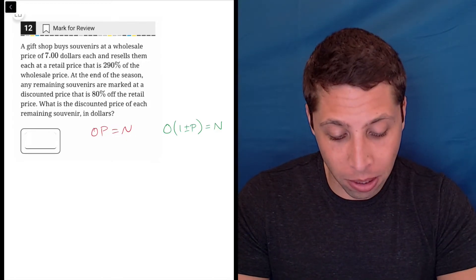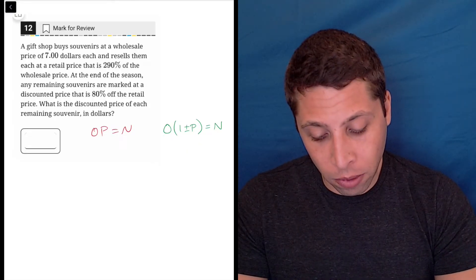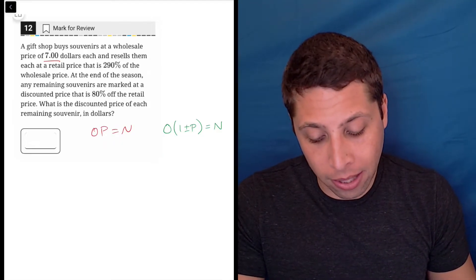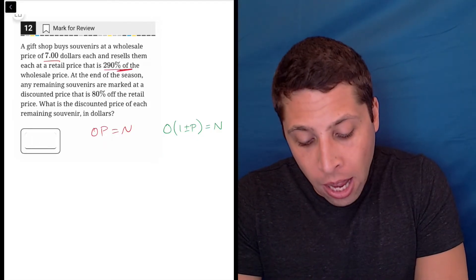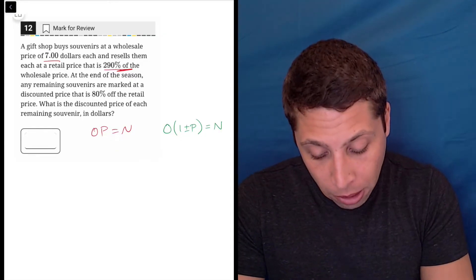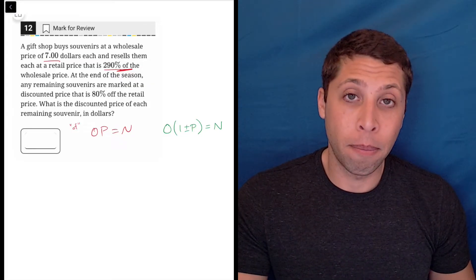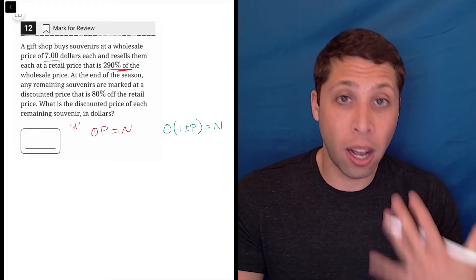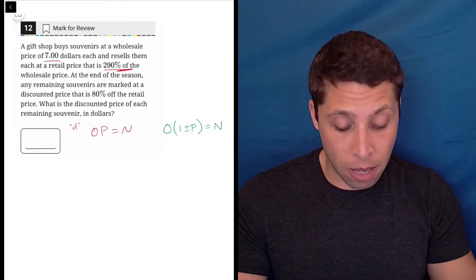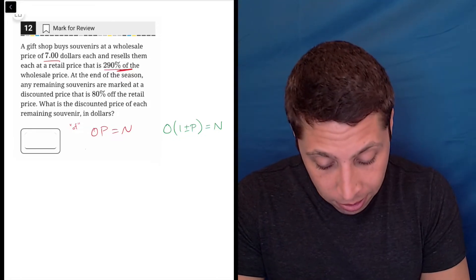So I'm going to show you how I would do it. Let's start at the beginning. They're telling me the gift shop buys souvenirs at a wholesale price of seven dollars each and resells them at a retail price that is 290% of the wholesale price. That 'of' is really important. That tells me I'm going to use this formula on the left here, because when we're just taking the normal percentage of something, there's no real trick. It's just you multiply by the percentage. So the O in my open formula stands for the original amount, and that original they tell us is seven dollars.